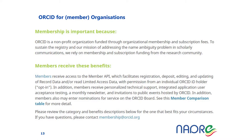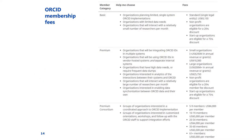Membership is important because ORCID is a not-for-profit organization funded through organizational membership and subscription fees. Members receive several benefits, including access to special APIs to query the ORCID database and gather data for researchers of their organizations. They can also receive personalized technical support, integrated application user acceptance testing, monthly newsletters, and invitations to public events. ORCID membership is not free, while ORCID profiles are free and will be free forever.